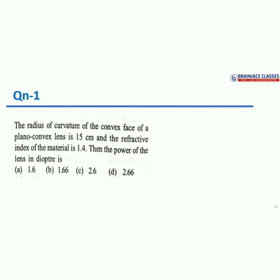Now think for a moment: what is the relation connecting the power of the lens — which is 1/f — with the radius of curvature and the refractive index of the material? How many radii of curvature will there be? There are two: R1 and R2. Either R1 = 15 cm or R2 = 15 cm.